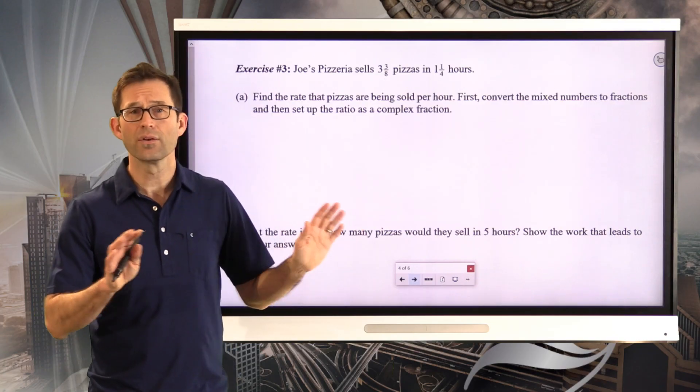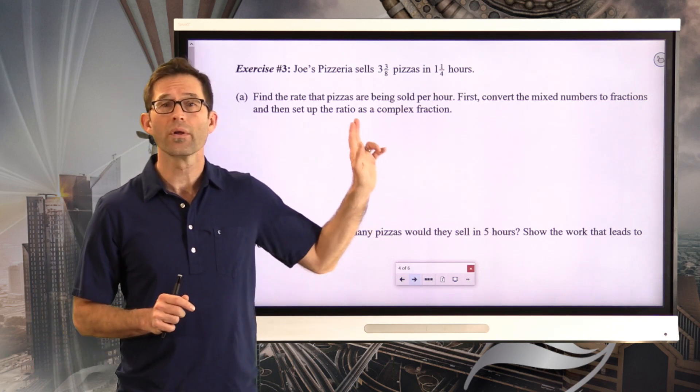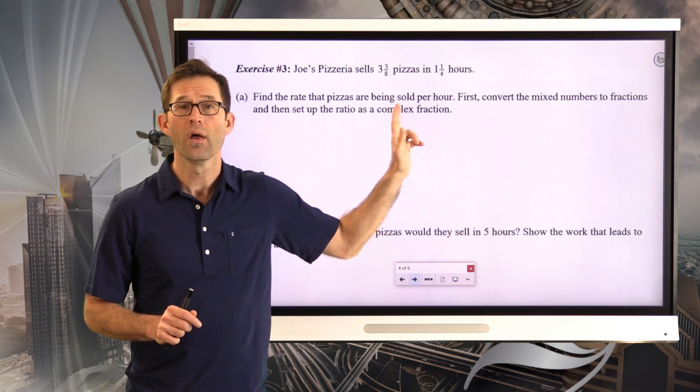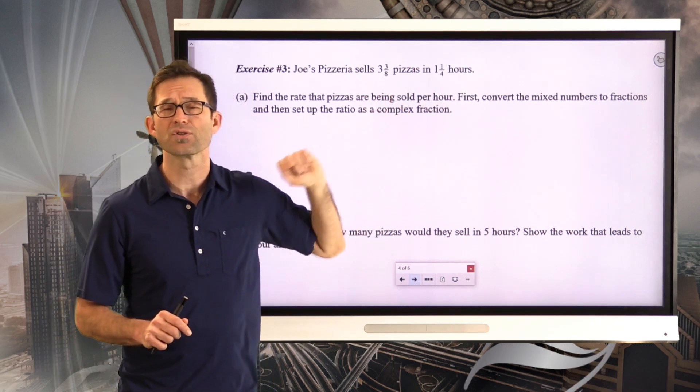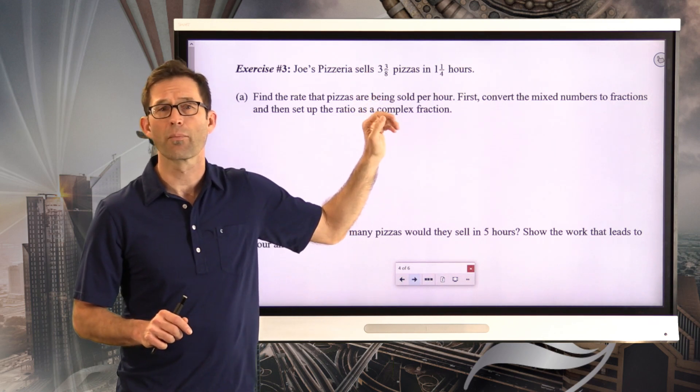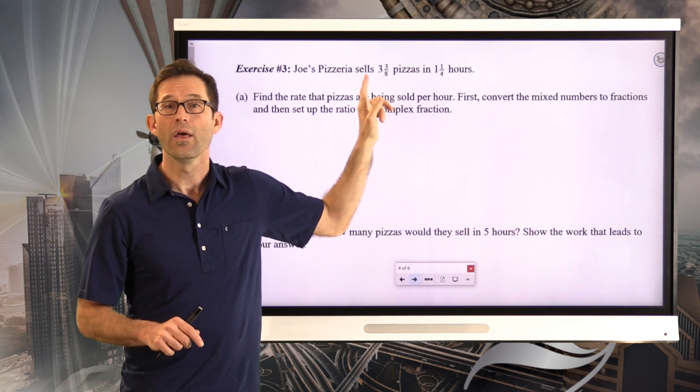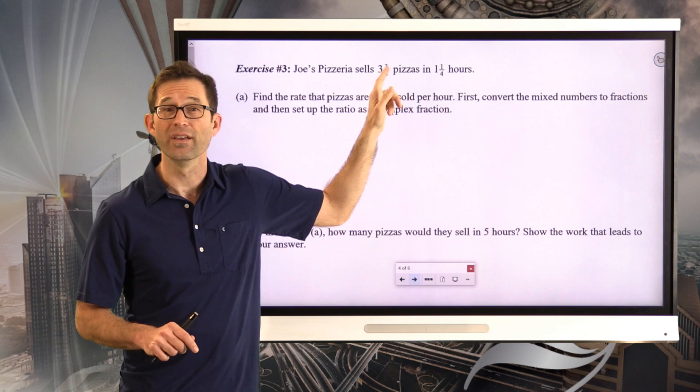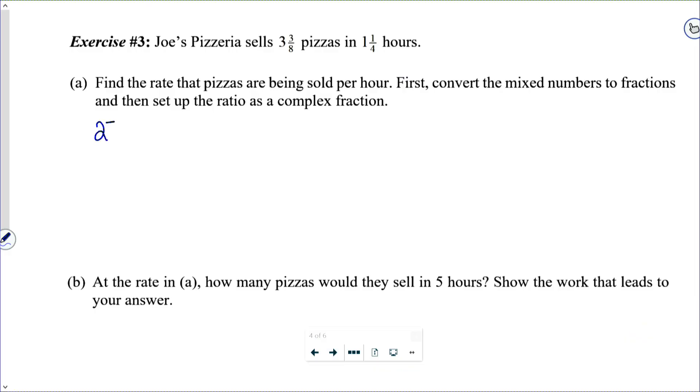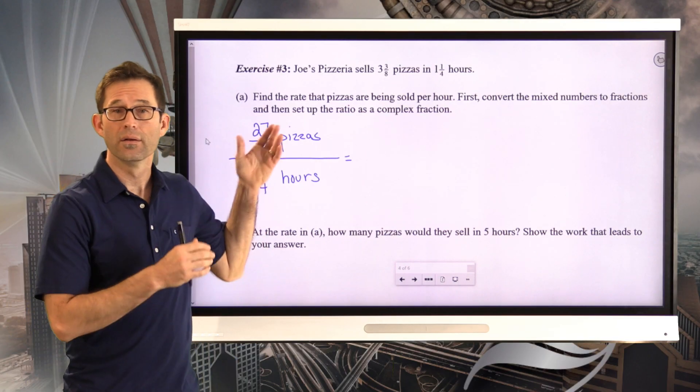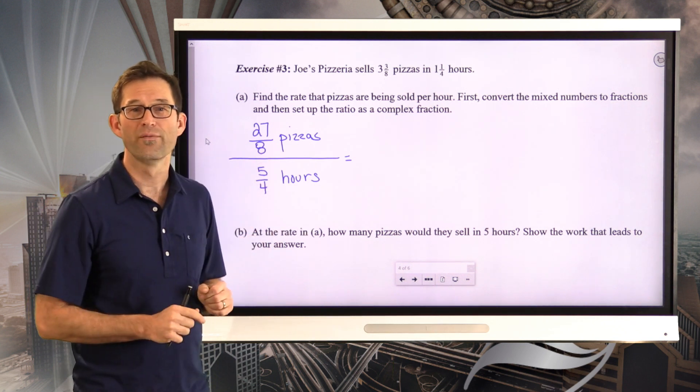All right, well, first, let's kind of do two things at once. I want to set up the ratio, but also do the conversion. We're looking for pizzas per hour, so pizzas should be in the numerator, per fraction bar, hour denominator. The first thing I'd like to do is I'd like to actually convert that into a mixed number, since I have, or sorry, an improper fraction. It is a mixed number right now. Since I have three and three-eighths, three is going to be 24-eighths plus another three is going to be 27-eighths. We've got 27-eighths pizzas. For every, now let me convert one and one-quarter, that's going to be five-quarters hours. So that's my first ratio. I've got 27 and an eighth pizzas per five and a quarter hours.